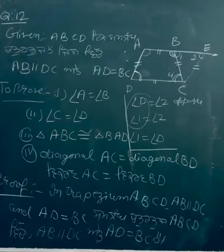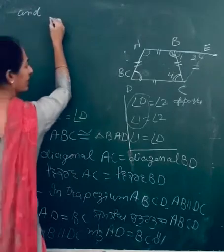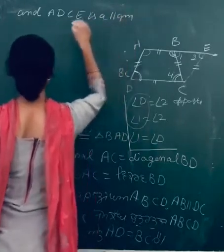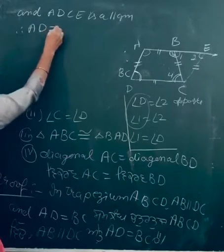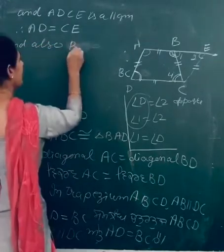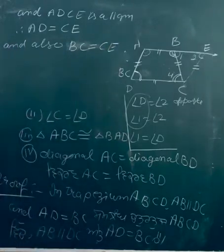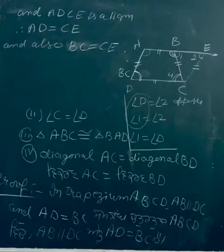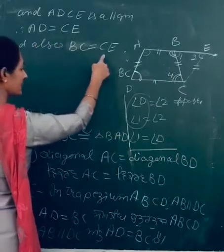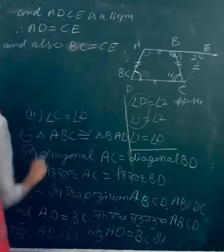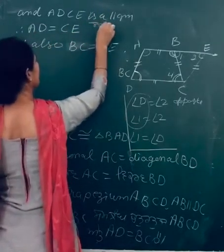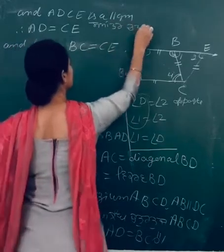In trapezium ABCD, AB parallel DC and AD equal BC. Since AD and BC are equal, then ADCE is a parallelogram. So AD equal CE and also BC equal CE.